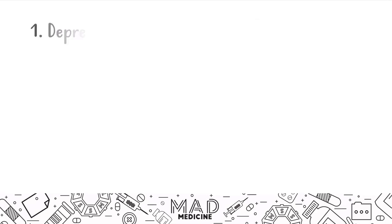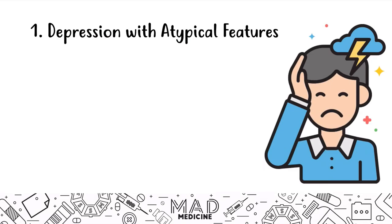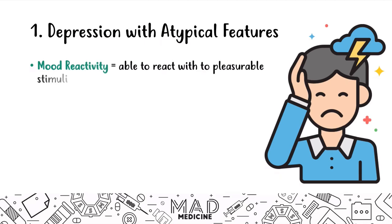Let's first start talking about depression with atypical features. In this type of depression, patients have something called mood reactivity, which means they're able to react to pleasurable stimuli. In normal depression, patients don't really react to pleasurable stimuli — they've lost control of their emotions. But in this case, they have some control and the ability to react to pleasurable stimuli.